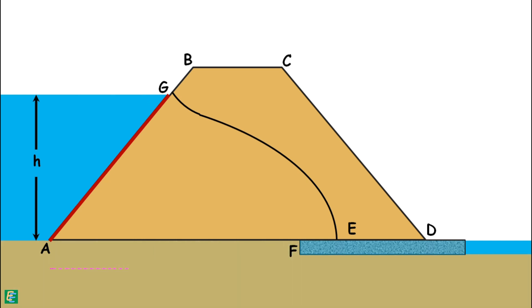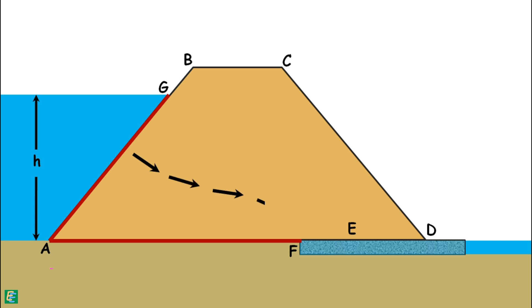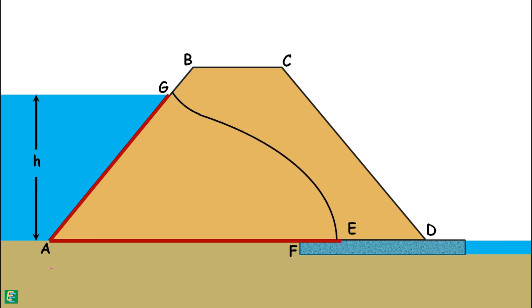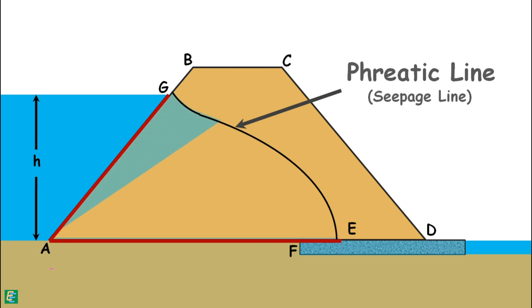The bottom surface of the dam is the impermeable boundary — water cannot cross it but may flow along it from the upstream face to the filter. Hence the bottom boundary AF is a flow line. When water exits from the filter, it has zero pressure head and zero elevation head. Therefore, the pressure along the filter is the same and equal to zero, making the discharge face EF an equipotential line. The fourth boundary is the top flow line GE, called the phreatic line or seepage line.